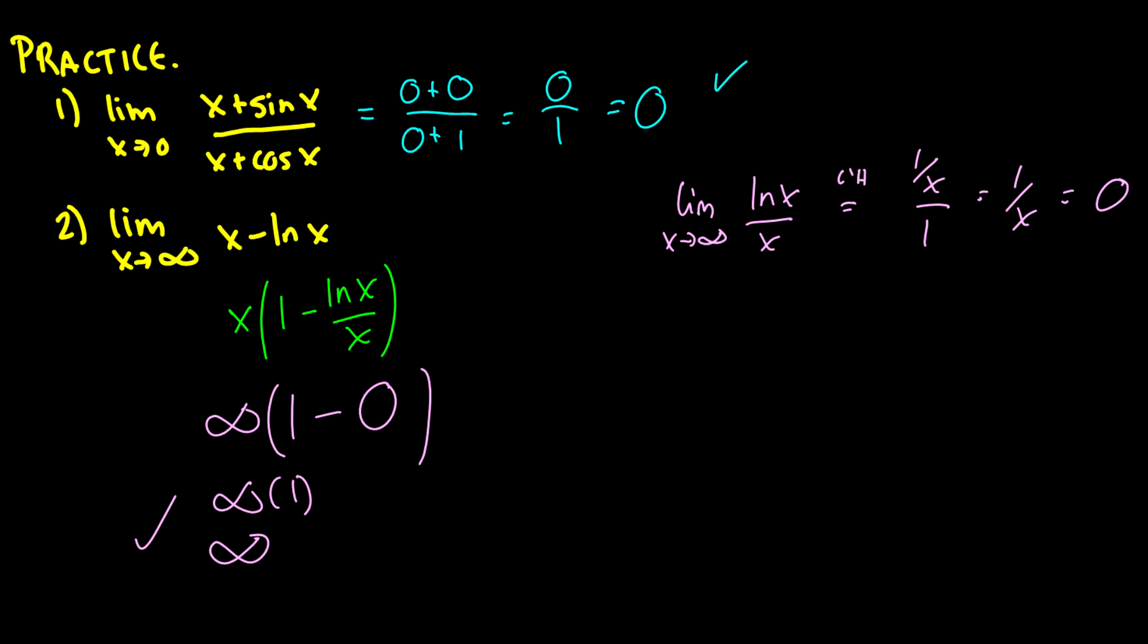The one thing you do need to do to make sure you don't screw anything up is check the preconditions. The preconditions are that you get 0/0, some constant over 0, or infinity over infinity. If none of these occur, you cannot do it. You must have at least one.